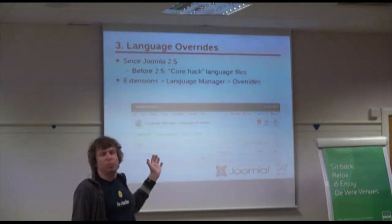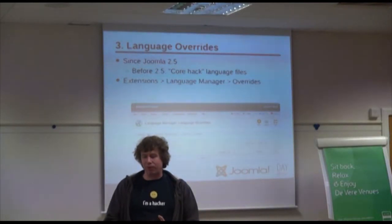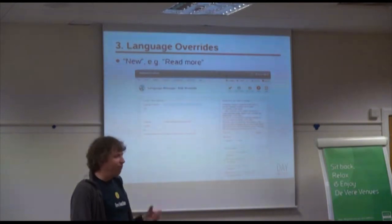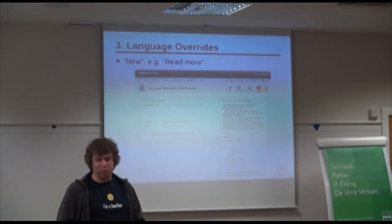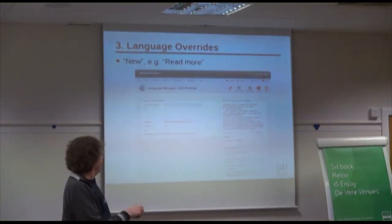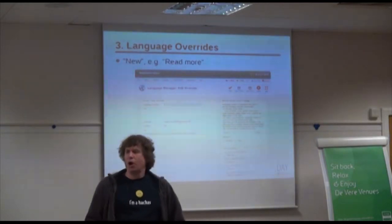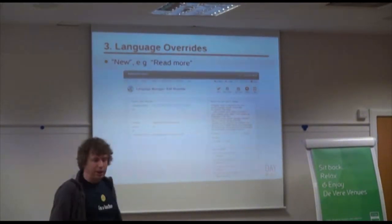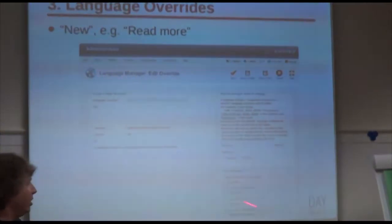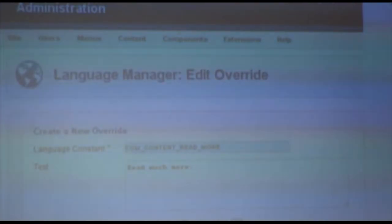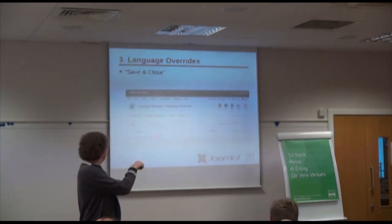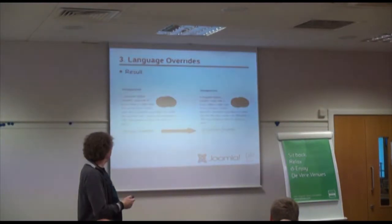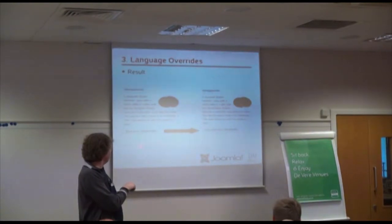Since Joomla 1.6, so maybe since 2.5, you have the language files with the overrides option. In Extensions > Language Manager, it says Overrides. If you want to change 'read more' to 'read much more', you press New. You can find constants or find the values. I searched for the value 'read more' and it showed me all the constants with translations. I picked one, made it 'read much more', saved, and it was in the list. The result: it now says 'read much more'.